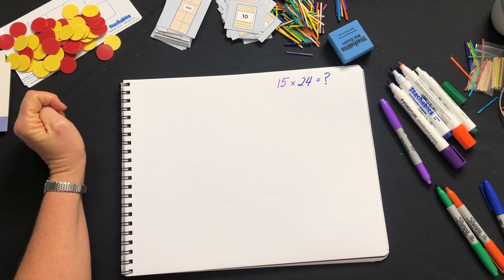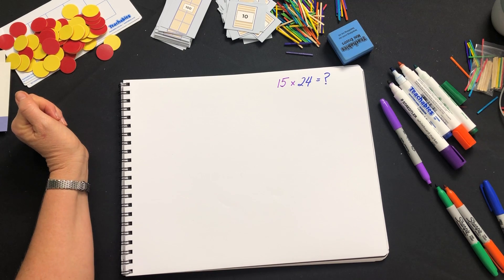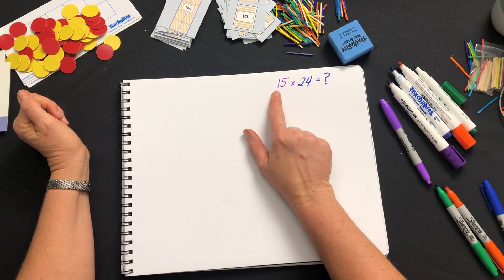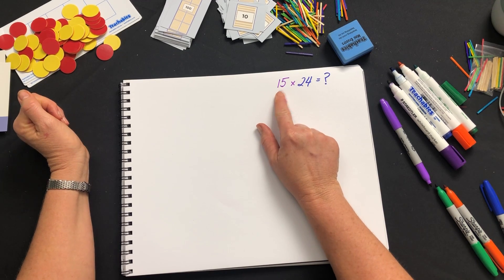Hi, welcome to this video where we're going to look at double digit multiplication. So we're going to look at 15 multiplied by 24 or 15 groups of 24.